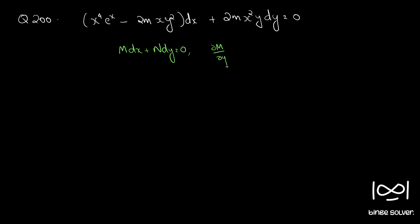∂M/∂y equal to ∂N/∂x. So our M here is x raised to 4 e raised to x minus 2m y squared. N is 2m x squared y. ∂M/∂y equal to minus 4m xy. ∂N/∂x equal to 4m xy.